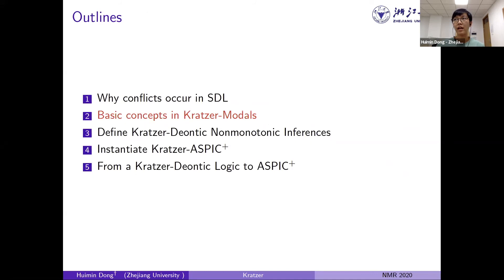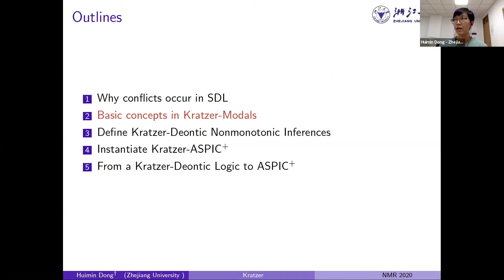The talk outline is: first, why we want to use Kratzer's theories (conflicts in Standard Deontic Logic, SDL); second, basic concepts in Kratzer's modality — spending most time explaining why it is important, since she clearly explains how to categorize modality in a compositional way; then, briefly, how to define Kratzer-based non-monotonic inference in deontic logic; then, instantiating this in formal argumentation; and finally, the connection between Kratzer's deontic logic and formal argumentation.